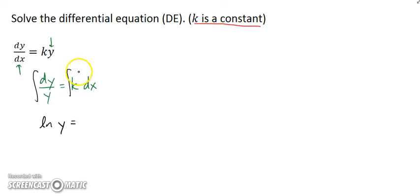K is a constant, so this here is nothing more than k times the integral of dx. Remember that you could pull constants out of integrals. So this would be k times x plus some constant c.